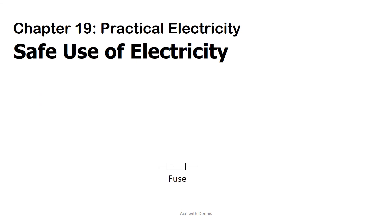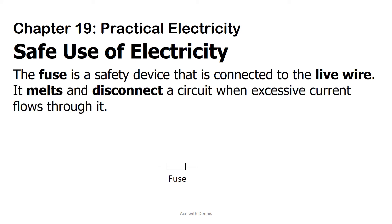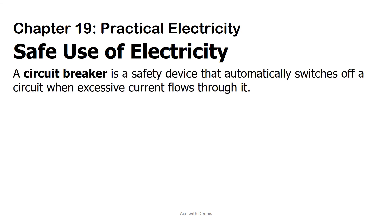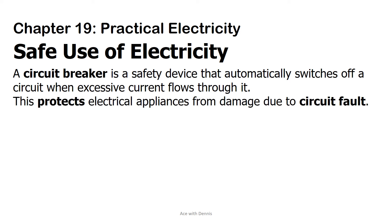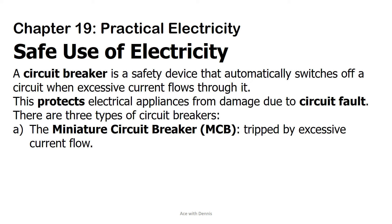This is the symbol of a fuse. The fuse is a safety device connected to the live wire. It melts and disconnects a circuit when excessive current flows through it. The current rating of a fuse is the minimum amount of current that will cause it to melt. A circuit breaker is a safety device that automatically switches off a circuit when excessive current flows through it, protecting electrical appliances from damage due to circuit fault. There are three types of circuit breakers. A: the miniature circuit breaker, MCB — it is tripped by excessive current flow.